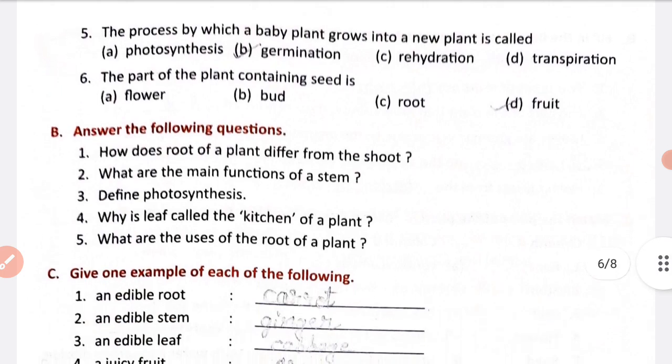Number 6: the part of the plant containing seeds — seeds are found inside the fruit. The answer is fruit.